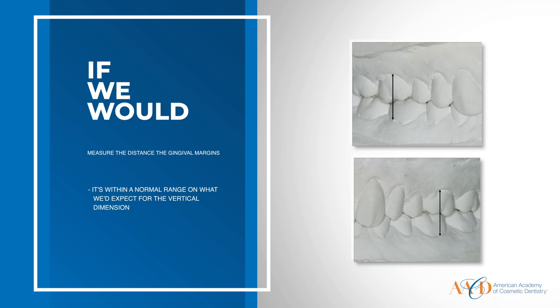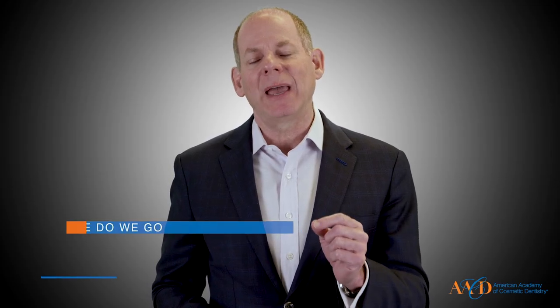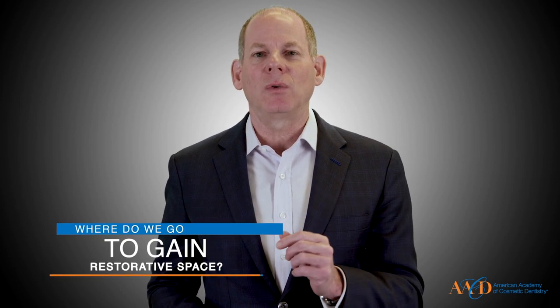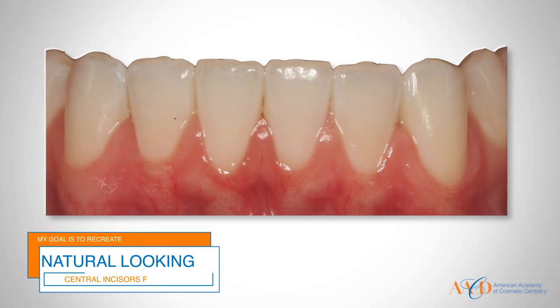So the question in Sam's case is: has he lost vertical dimension? That's not really the question. To me it doesn't really matter if he's lost vertical dimension — what's the real issue? The real issue is: do we need to gain restorative space? We start with the end in mind — where do we go to gain restorative space? My goal is to recreate natural-looking central incisors, lateral incisors, and canines for Sam, with ideal tooth proportion and length. I'm not worrying about whether he's lost vertical dimension, but rather how I'm going to gain restorative space to create naturally looking teeth for Sam.